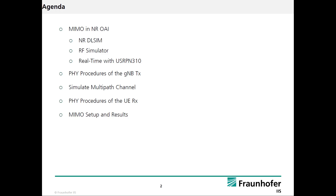Then we are going to have a look at the receive side — how the receiver is going to look like for multi-layer reception. At the end, I have some results from the DeFi simulator, and we also have some results to show from the real-time setup that we have at Fraunhofer Institute. With that setup, we support two USRPs with four transmit and four receive antennas.